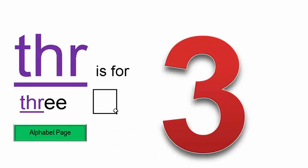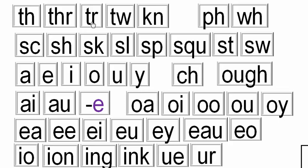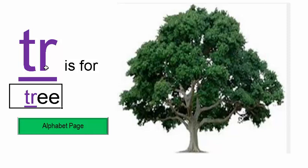THR gives you the THR sound, as in THREE. Here's THREE — one, two, three. There are three letters here. THR is also for TREE. Here's a tree. THR is for TREE.